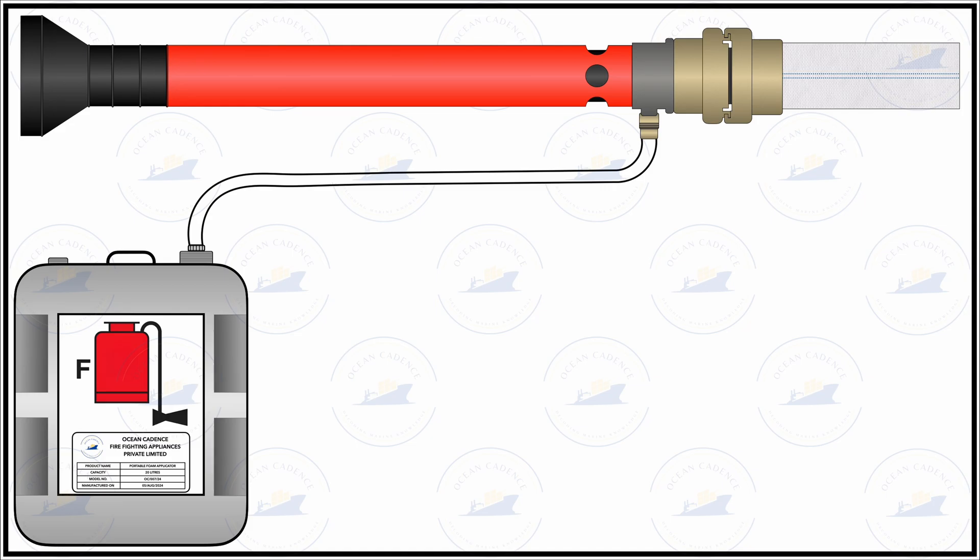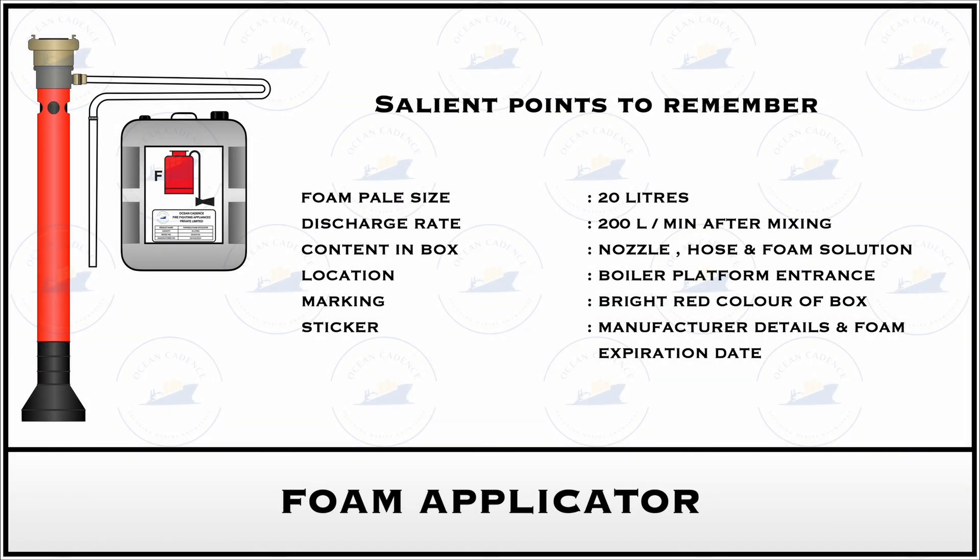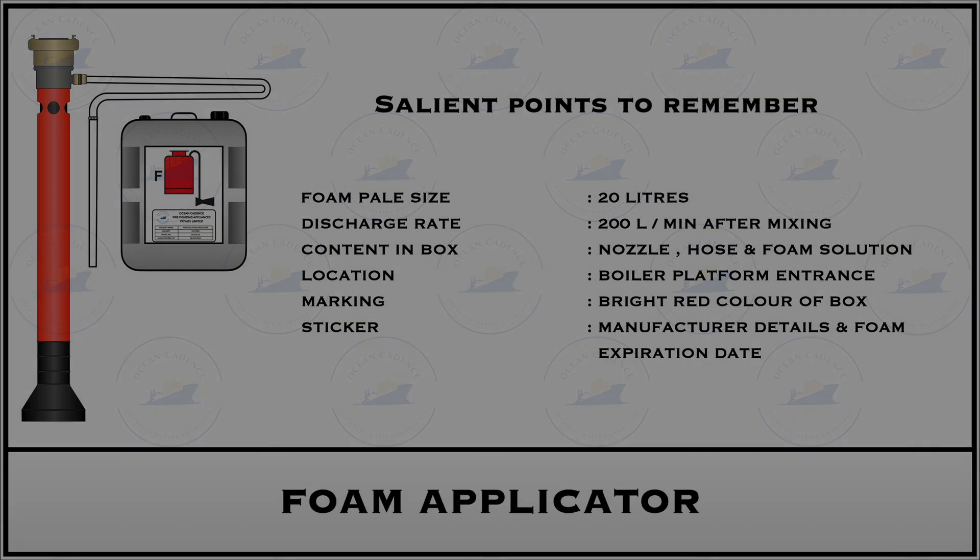Now what is important to know is that the pail size that is the size of the container that contains the foam solution is up to 20 liters and the discharge rate of the nozzle after mixing of the solution, water, and air through the nozzles would be close to 200 liters per minute. Each of this item being stored in the box has to be inspected separately especially the foam solution container which is more like a jerry can and contains a sticker.